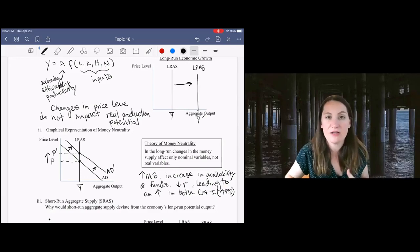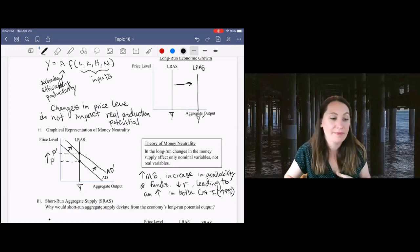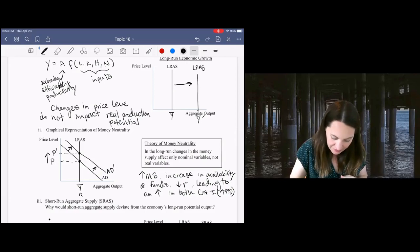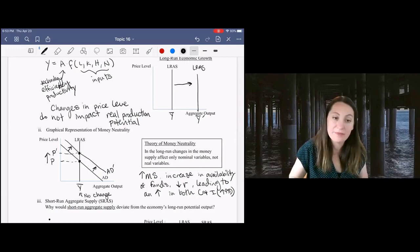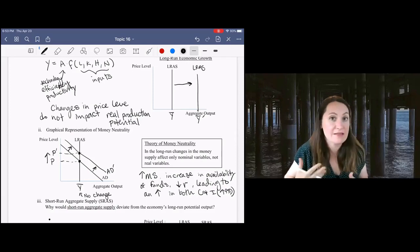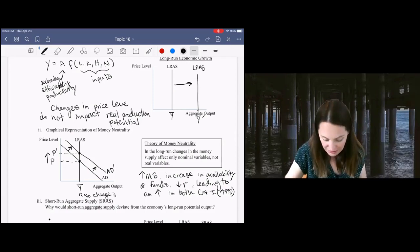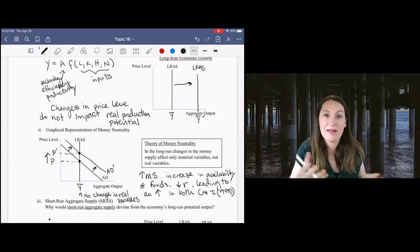This is the theory of money neutrality. In the long run, we increase money supply. That will increase prices, but we have the same level of output. We have the same need for labor. It's not going to change employment. So there's no change in the real variables within our economy, only the nominal variables.